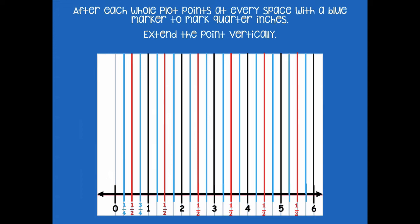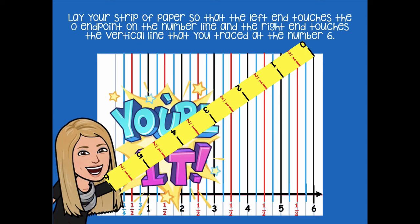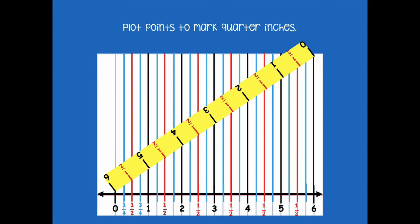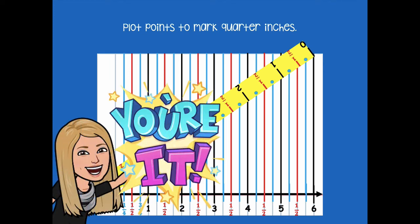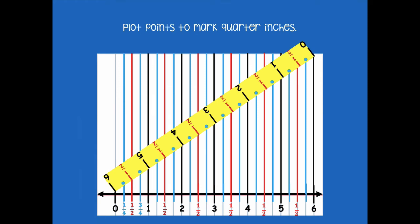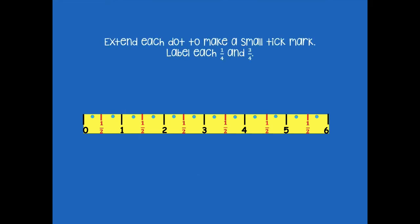Take your strip and lay it vertically. Plot your points to make quarter inches — every time your blue lines touch your ruler, put a dot. Pause the video and do that. Then turn your ruler to the side, extend each dot to make a small tick mark, and label one quarter and three quarters. So this is one quarter, then three quarters — then you start over at one again: one quarter, three quarters. Repeat that same process for all of your blue dots. Pause the video, make yours look like mine, and then click play when you're ready for the next step.